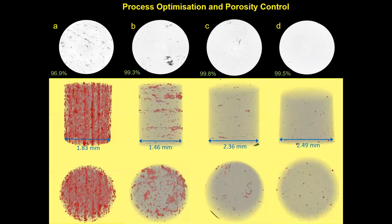I have produced 27 different samples using different sets of processing parameters, four of which are shown in this slide. We used non-destructive X-ray computed tomography or CT experiments to visualize the internal structure of the material. These green numbers are the density of the material.